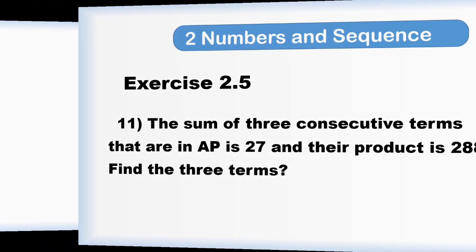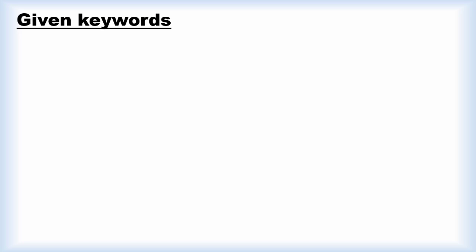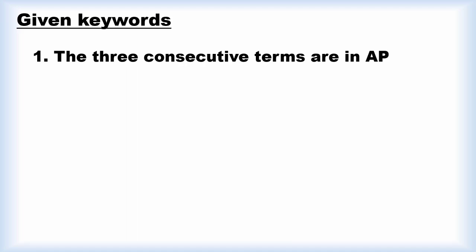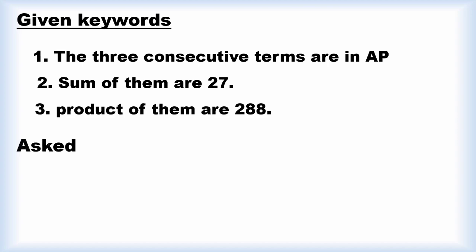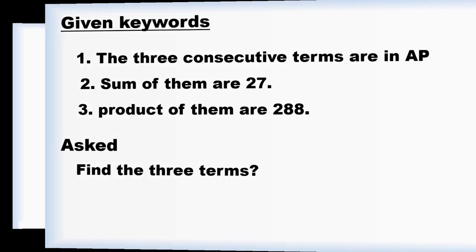This is a very interesting problem. We will see it one by one. First of all, we are going to identify the given keywords. The given keywords are: the three consecutive terms are in AP, the sum of them is 27, and the product of them is 288. What is asked? We have to find the three terms.